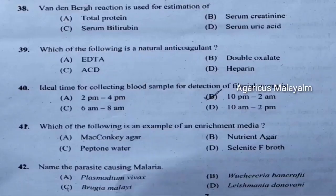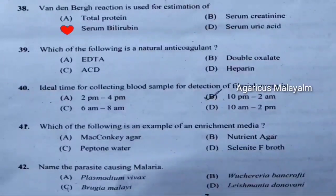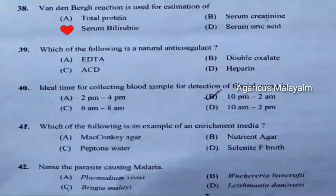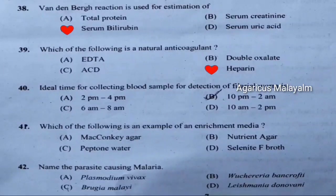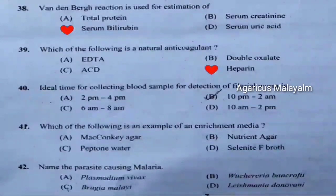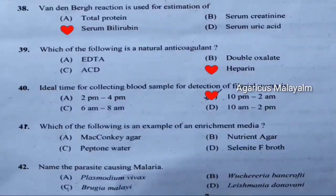Thirty-eighth question: Van den Berg reaction is used for the estimation of. Correct answer is option C — serum bilirubin. Thirty-ninth question: Which of the following is a natural anticoagulant. Correct answer is option D — heparin. Fortieth question: Ideal time for collecting blood sample for detection of filaria worms. Correct answer is option B — 10 PM to 2 AM.